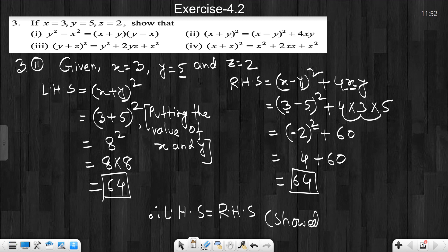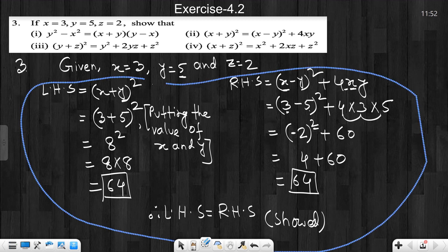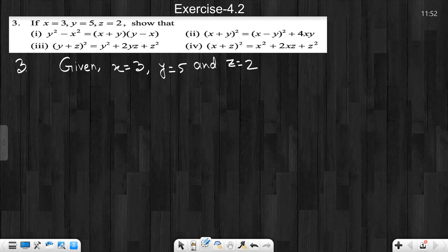What the question says is show that. So we showed it. So now 1 and 2 number questions are solved. Now we will do 3 number question solution. For 3 number question solution, we write given x equals 3, y equals 5, and z equals 2.